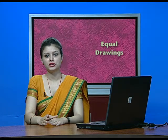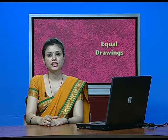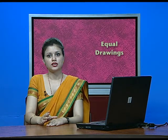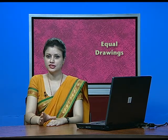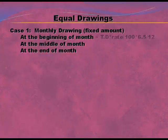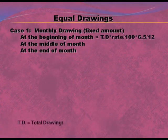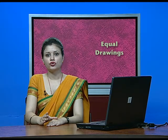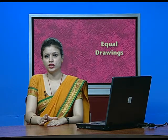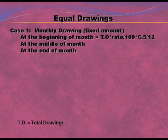When drawings are made at the beginning of the month, the first drawing is on 1st January, second on 1st February, third on 1st March, and so on up to December. The formula is: Total Drawing × Rate/100 × 6.5/12. Total drawing means if we are drawing one thousand per month, for the whole year it will be twelve thousand. The rate will be given in the question, and 6.5/12 is the average period.